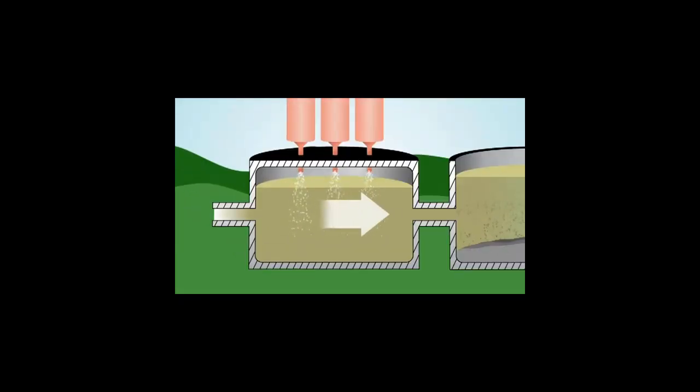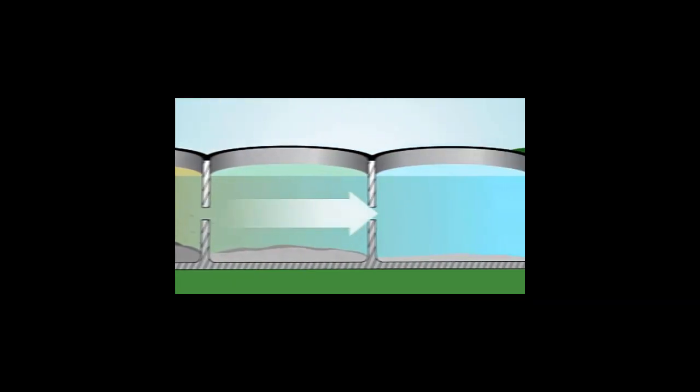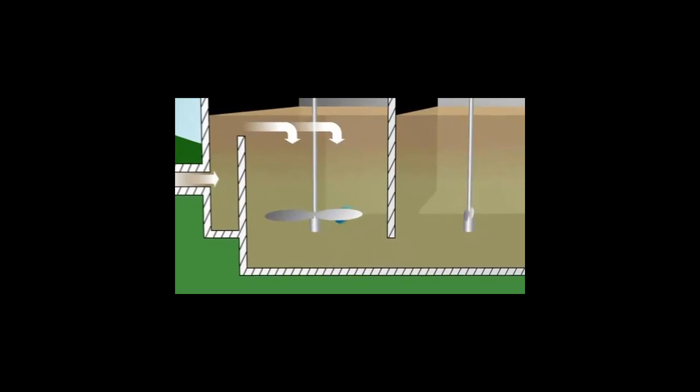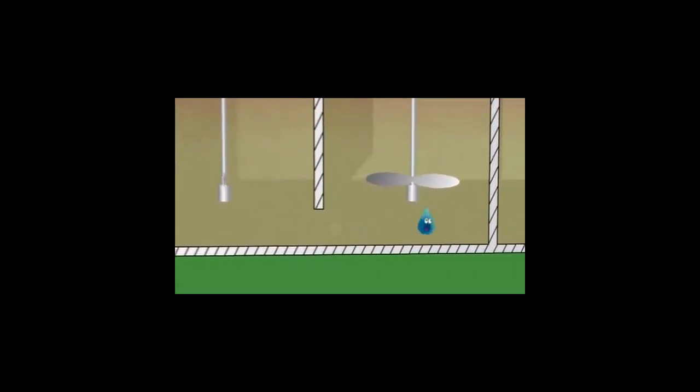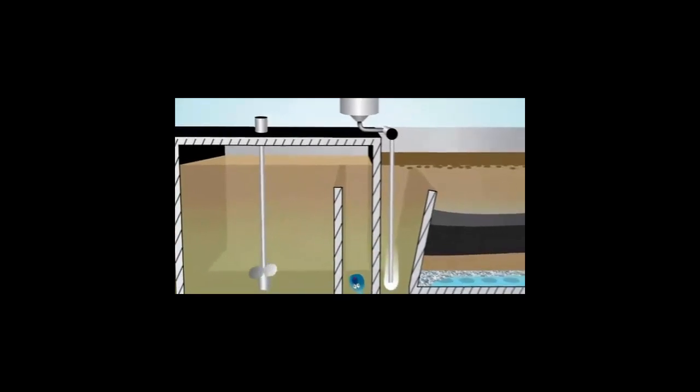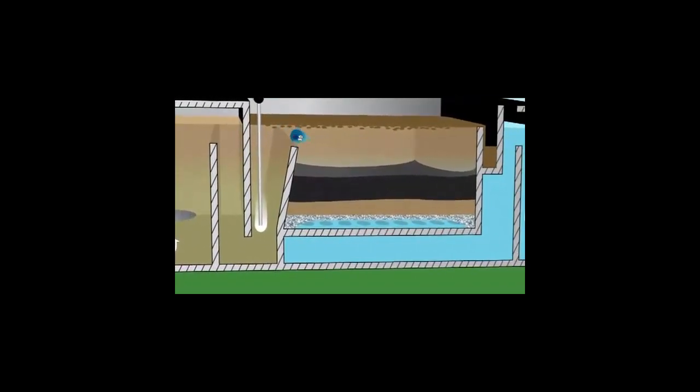American water uses two common processes to separate and remove flock from water. One sinks flock to the bottom of a tank. The other method pumps air into the water and flock, causing residual particles to float to the top. The separation of water and flock is called clarification. With either method, the clarification process removes most of the flock from the water.